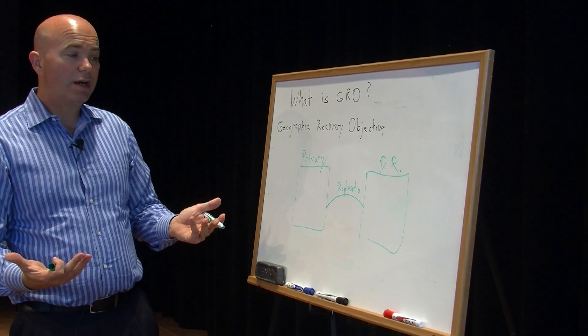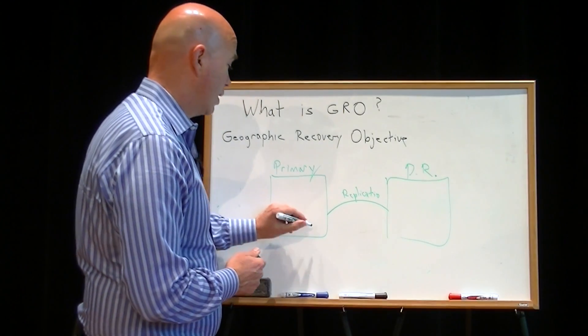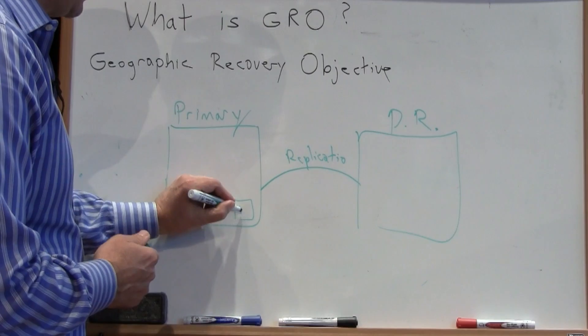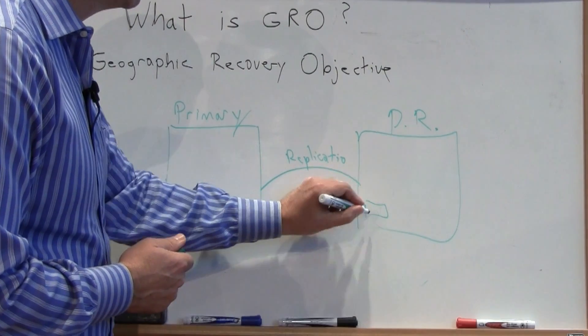If I have a Geographic Recovery Objective of, say, 24 hours, I might be able to get away with doing backups locally and just replicating my backup jobs here.